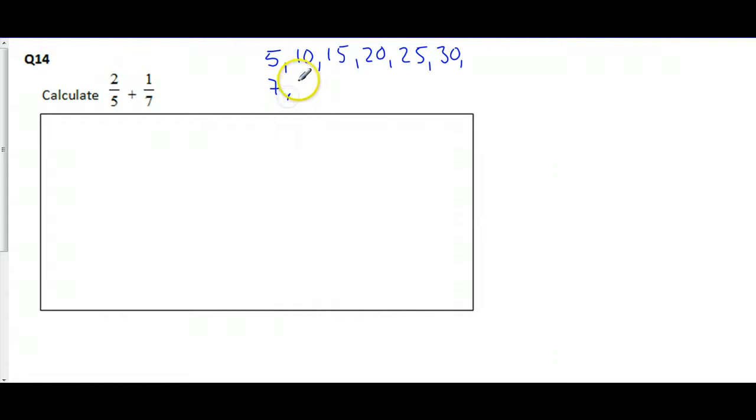7, 14, I'm looking at the denominators—21, 28, not found any matched up yet. Let's get 35, 42. Oh, hold on, hold on. We can see that 5 is going to go to 35, aren't they?